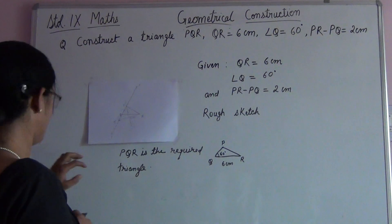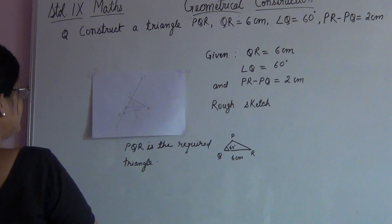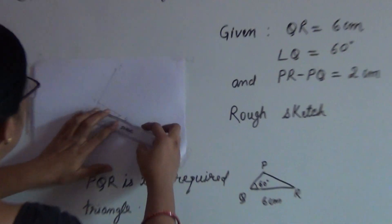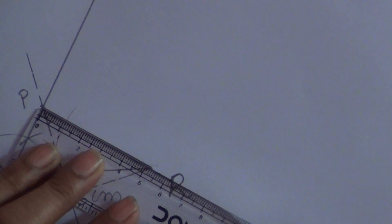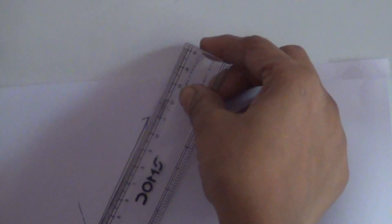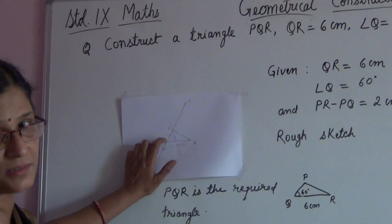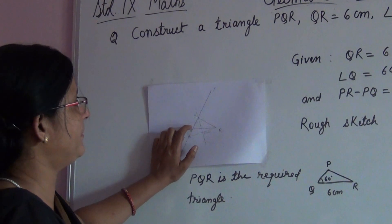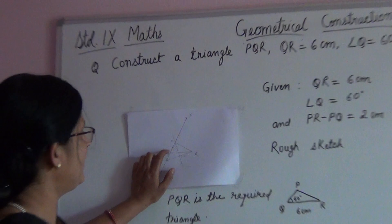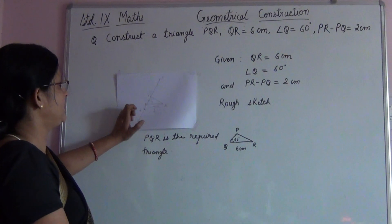Children, you see here we can, by measurement, we can justify that difference of the two sides is equal to 2 cm. Here you see, this is 5.2 cm and here this is 3.2 cm. PR is 5.2 cm and PQ is 3.2 cm. This we can verify using actual measurement, and the difference of PR and PQ is 2 cm here.